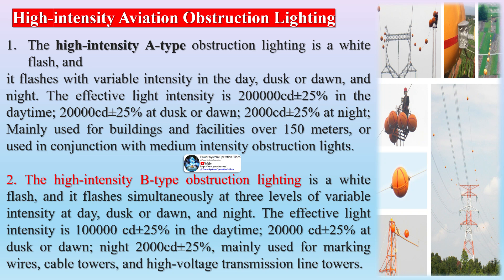High-intensity aircraft warning lights are generally installed on the top of structures more than 150 meters in height.